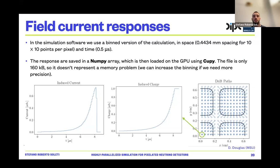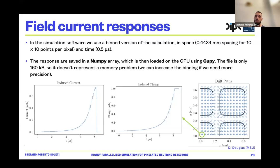In the simulation software, we use a binned version of this calculation in both space and time. The response curves are saved in a NumPy array loaded onto the GPU using CuPy. The file is only 160 kilobytes, so it doesn't represent a memory problem. On the left, you see the plot of the induced current with a stair-like shape because of 0.5 microsecond time binning. If we need more precision, we can increase the binning — but for our goals this precision is sufficient.